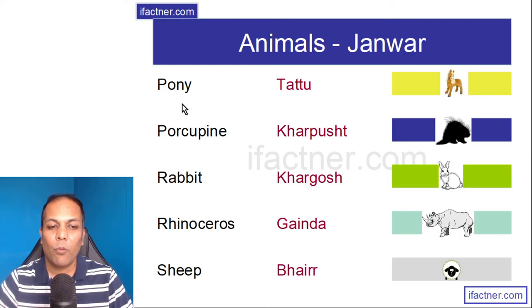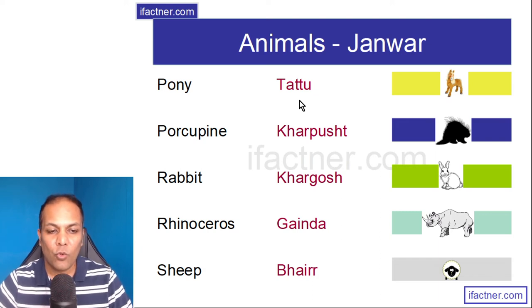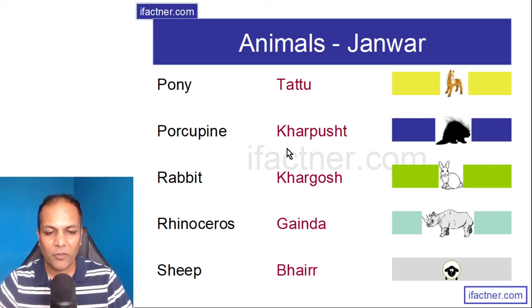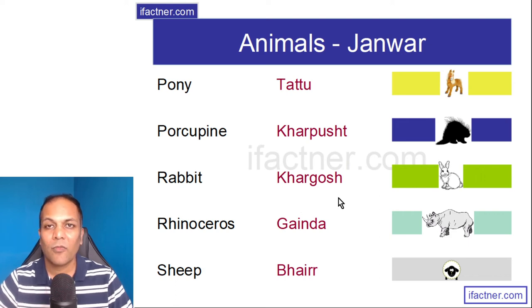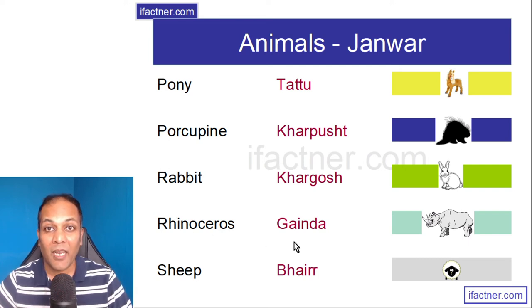Pony is Tattoo. Porcupine is Kharpusht. Rabbit is Khargoosh. Rhino is Gainda.